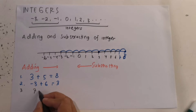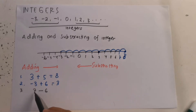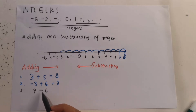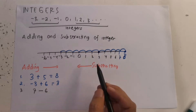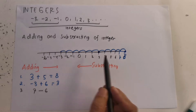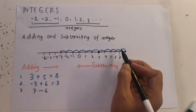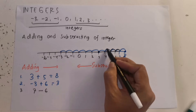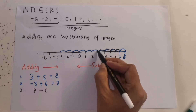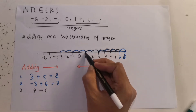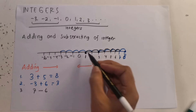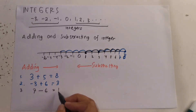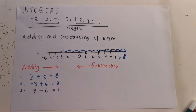Example 3: 7 minus 6. We start from 7. Because this is subtracting, we move to the left side — 1, 2, 3, 4, 5, 6 — and we end at number 1. So the answer is 1.